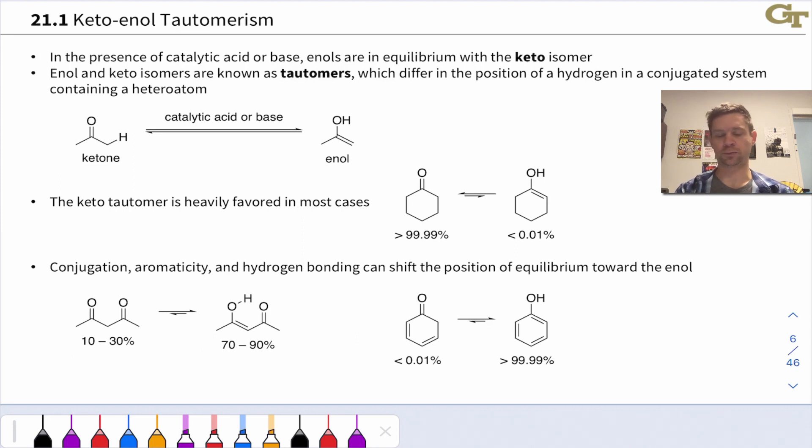We see the difference between the keto and enol forms is which atom gets protonated, O- or C- in the enolate. If we protonate that C-, we get the keto form; protonate the O-, we get the enol form. These are tautomers, and we'll see other examples involving nitrogen later in the course.